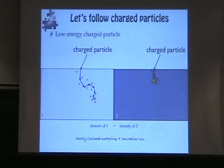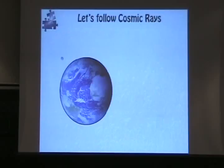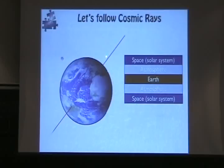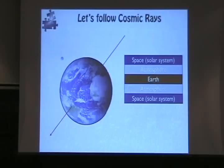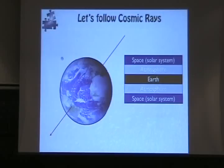In denser material, the particle cannot travel as far because it encounters more atoms per unit length and loses energy faster. Now, when it comes to cosmic rays interacting with the earth, they first meet the solar wind in the solar system, then the atmosphere of the earth. Most cosmic rays — except neutrinos — cannot go through this chain of material and will lose all their energy in the atmosphere. Before jumping into cosmic ray interaction in the atmosphere, I need to introduce one more process.